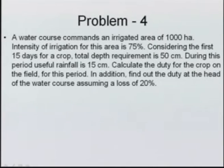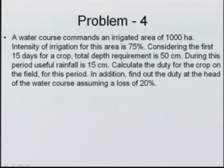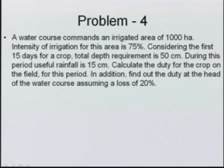Problem 4: a water course commands an irrigated area of 1000 hectare. Intensity of irrigation is 75 percent. For the first 15 days of a crop, total depth requirement is 50 centimeter and useful rainfall is 15 centimeter. Calculate the duty for the crop on the field, and also find duty at the head of the water course assuming a loss of 20 percent.